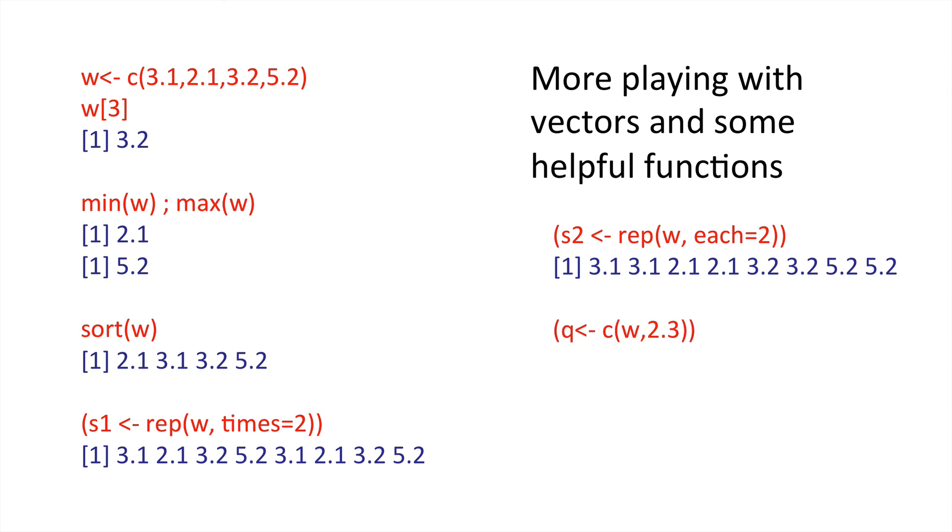Now, let's have a look at this, where we're combining one vector with some extra numbers. And here, q is defined as the concatenate between the vector w and 2.3. Then q is w and yet it's got 2.3 tacked on in the end. What's the length of q? Well, it's one up. It's gone up to five elements now.